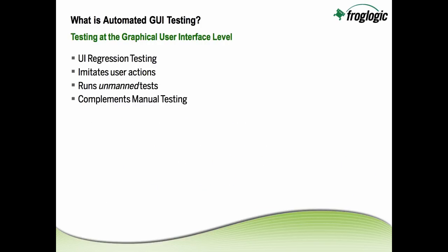Now before we dive into the product specifically, let's go over a few basics of automated GUI testing. Automated GUI testing is testing done at the graphical user interface level — UI regression testing your application at the interface level. It's there to help imitate user actions. You can run your tests unmanned, executing them around the clock as part of your build process or as part of another process. And it provides a nice complement to manual testing, freeing up more time for manual testing or to create additional tests for your regression test suite.